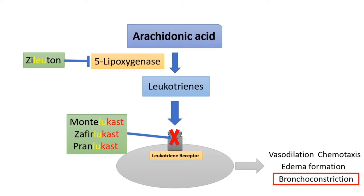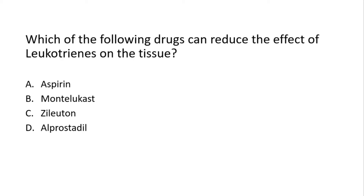Now let us discuss a tricky exam question: which of the following drugs can reduce the effect of leukotrienes on the tissue? We can directly eliminate aspirin and alprostadil because they are not related to leukotriene inhibitors. But we still have montelukast and zileuton, which both work on the leukotriene pathway. However, the question asks specifically about the effect of leukotrienes, so the answer is montelukast, because montelukast works on the receptor, thus inhibiting the effect of leukotrienes.